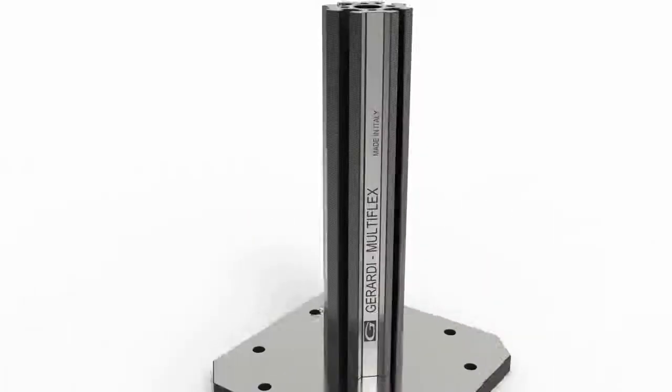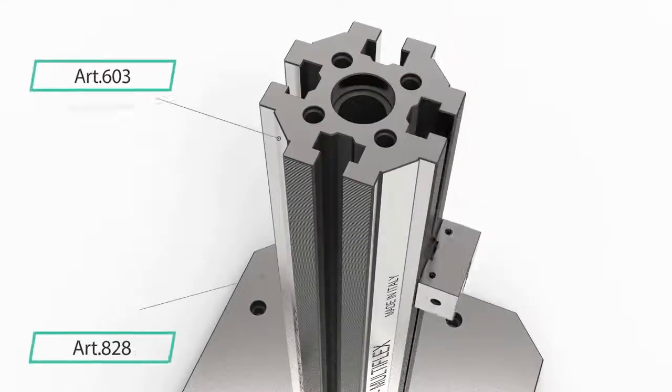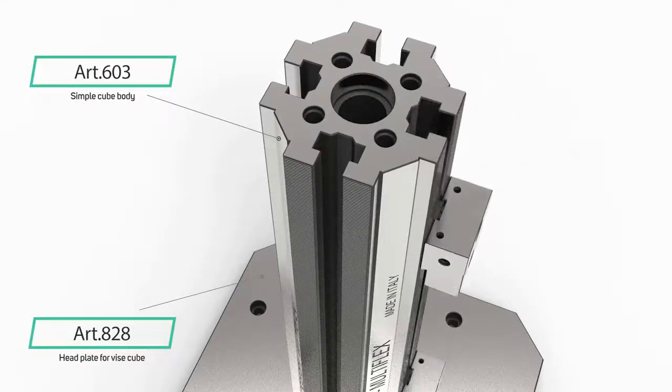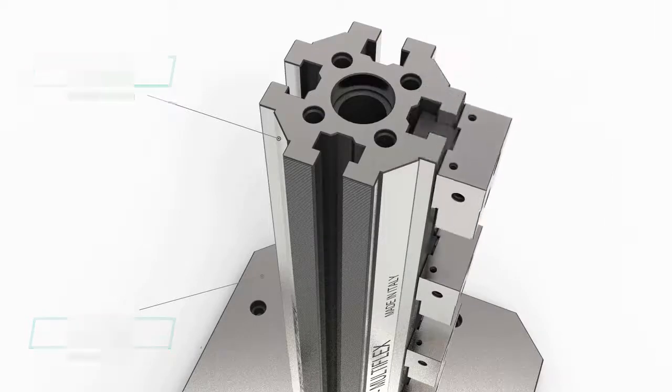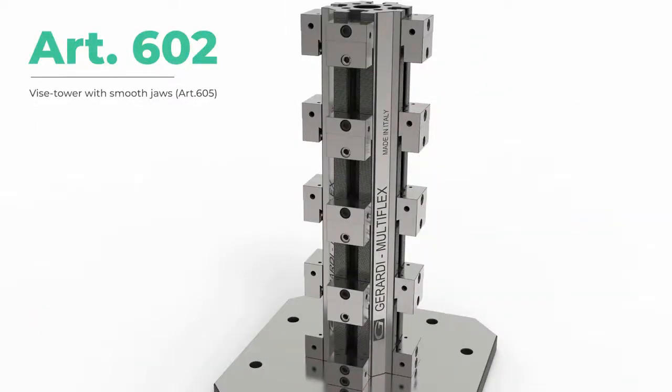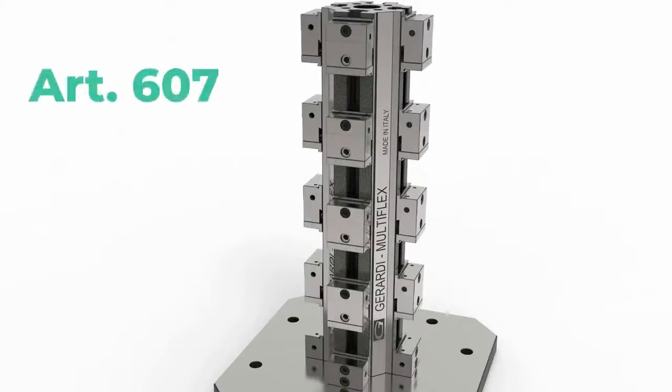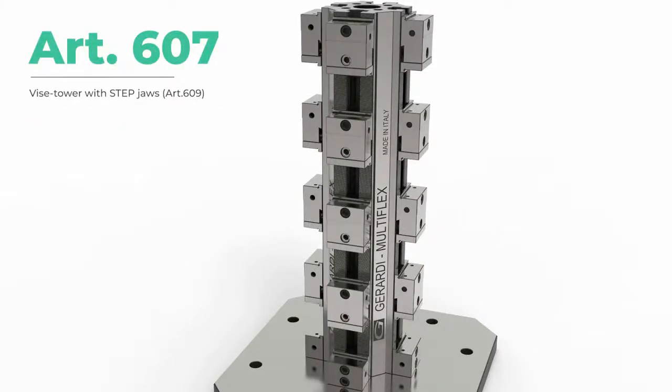Through spacers, tombstones or vise towers, ground combed teeth even between the fixed and movable jaws, Multiflex vises can be vertically assembled, linked to each other or clamped to specific work holding structures.